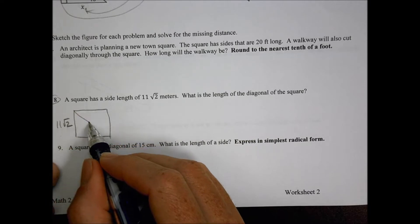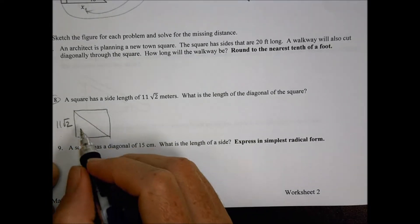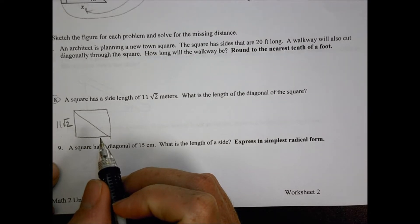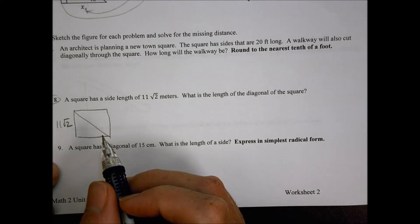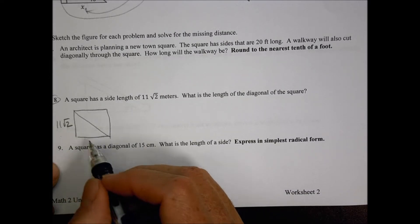It says that a square has a side length of 11 root 2, and that's our side length there. What is the length of the diagonal of the square? Well, the diagonal is the one that's going to go straight across here. So that's our diagonal right there. Now, there's a couple ways of thinking about it here. I can draw this like so, and I can say there's my diagonal, 11 root 2, no problem.